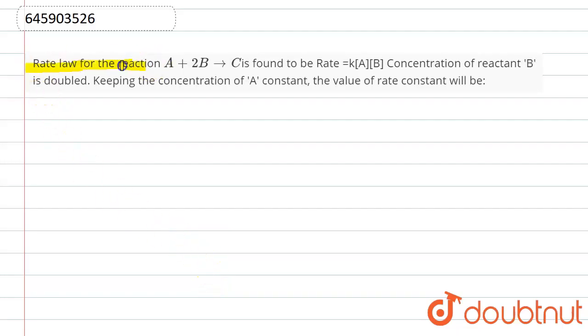law of a reaction A + 2B → C is found to be rate = k[A]^1[B]^1. Also concentration of reactant B is doubled, keeping the concentration of A constant. The value of rate constant will be?